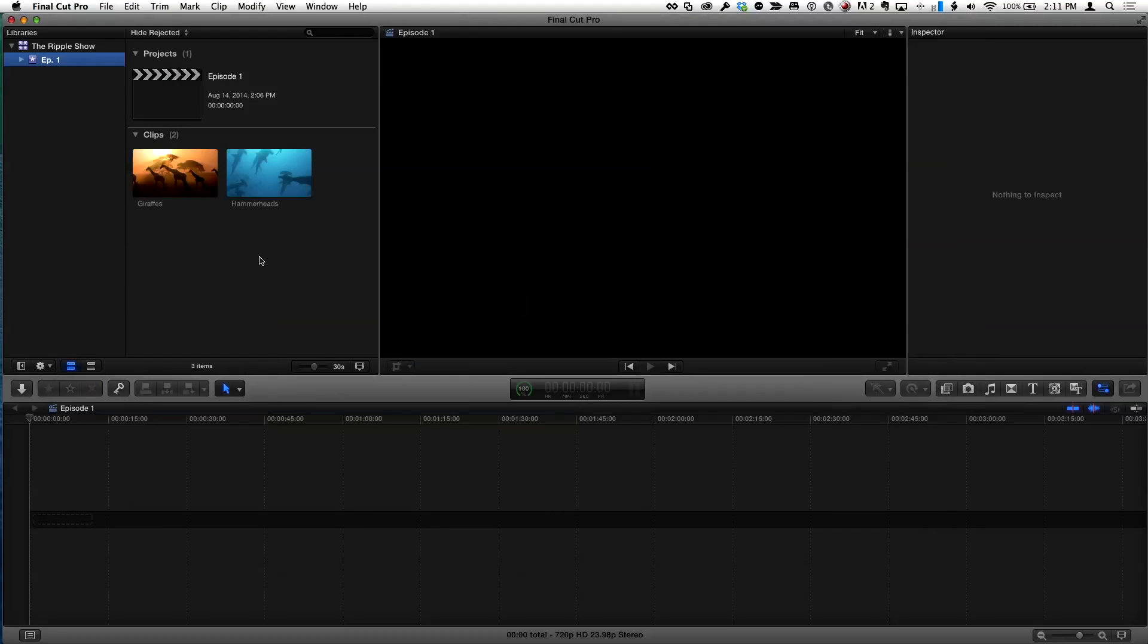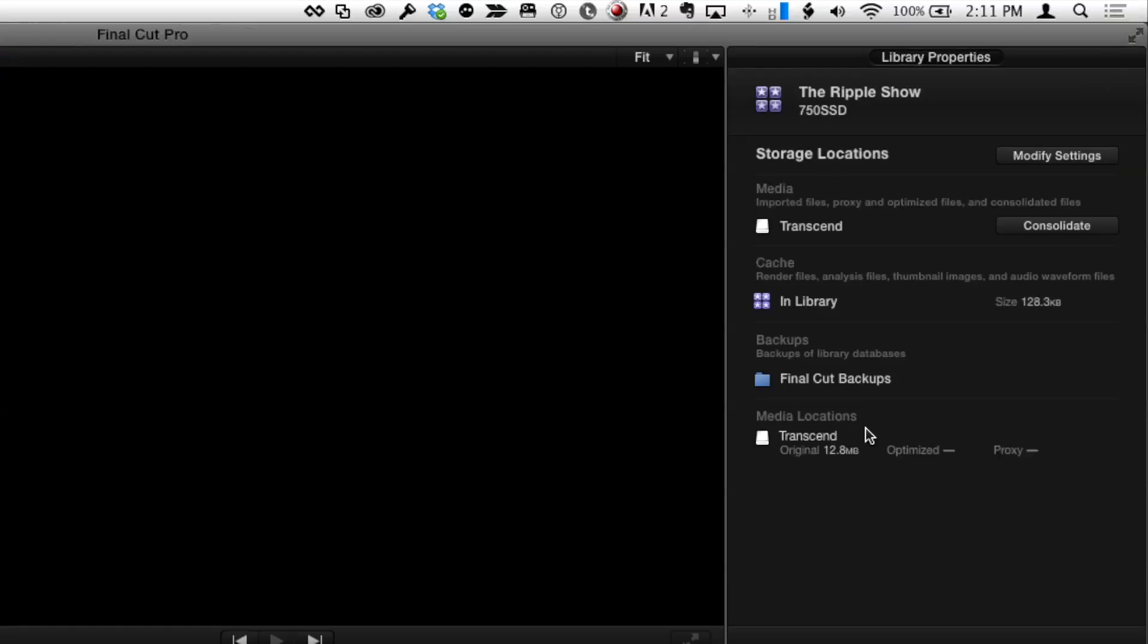I'll say import and it brings those clips in. If I go back to the library inspector we can see under media locations that the media I've imported is all on that Transcend external drive, and we don't have any proxy media.